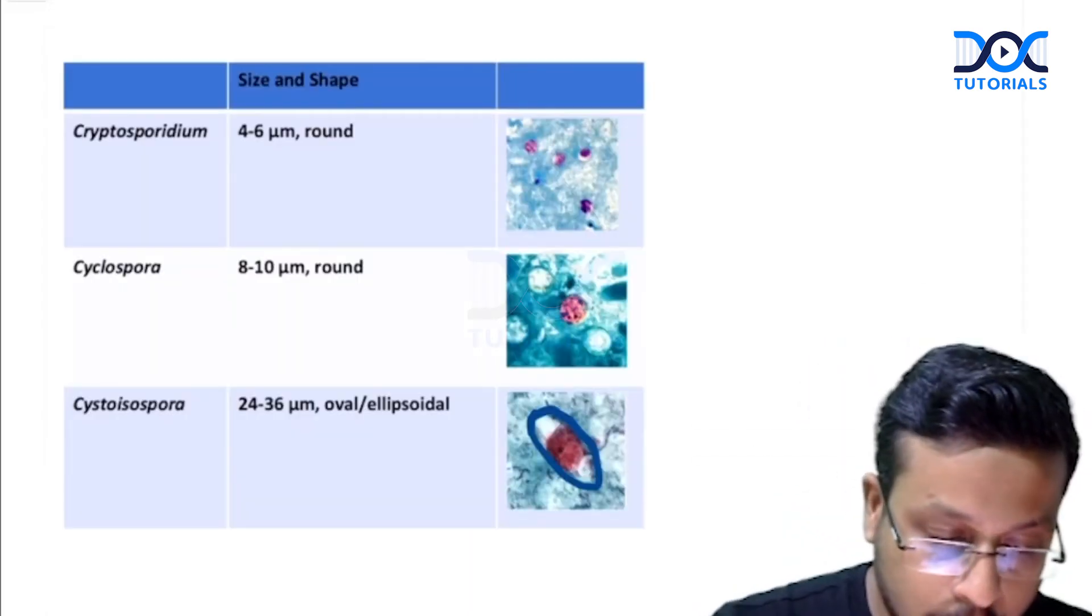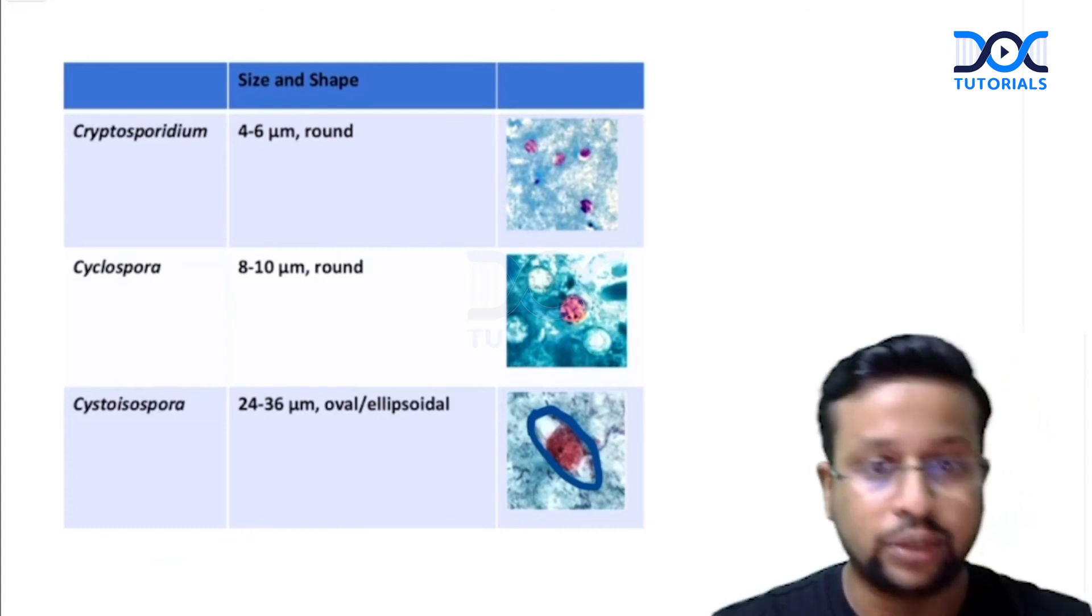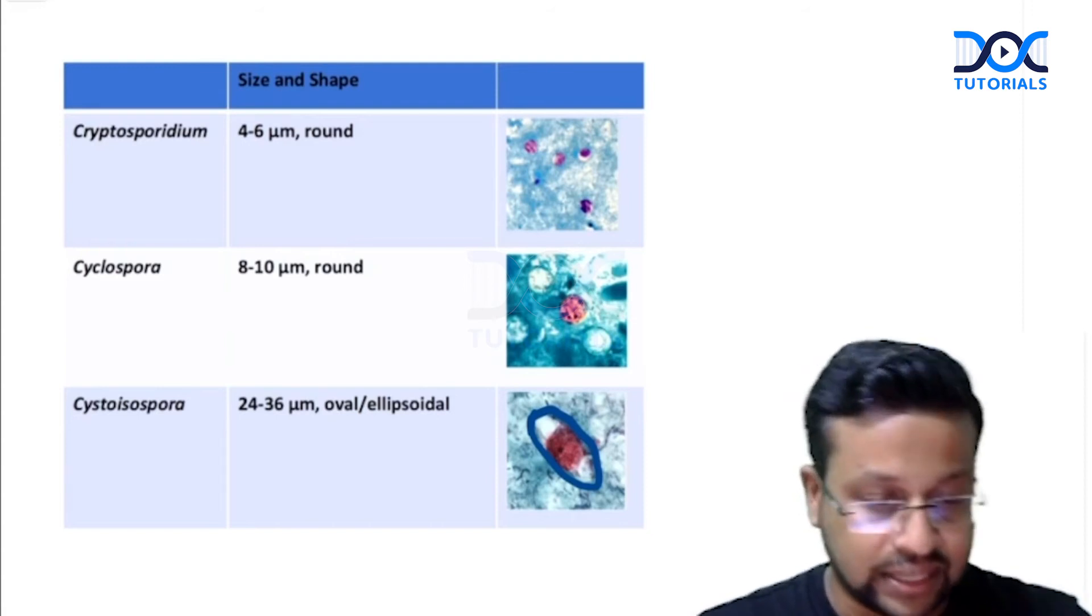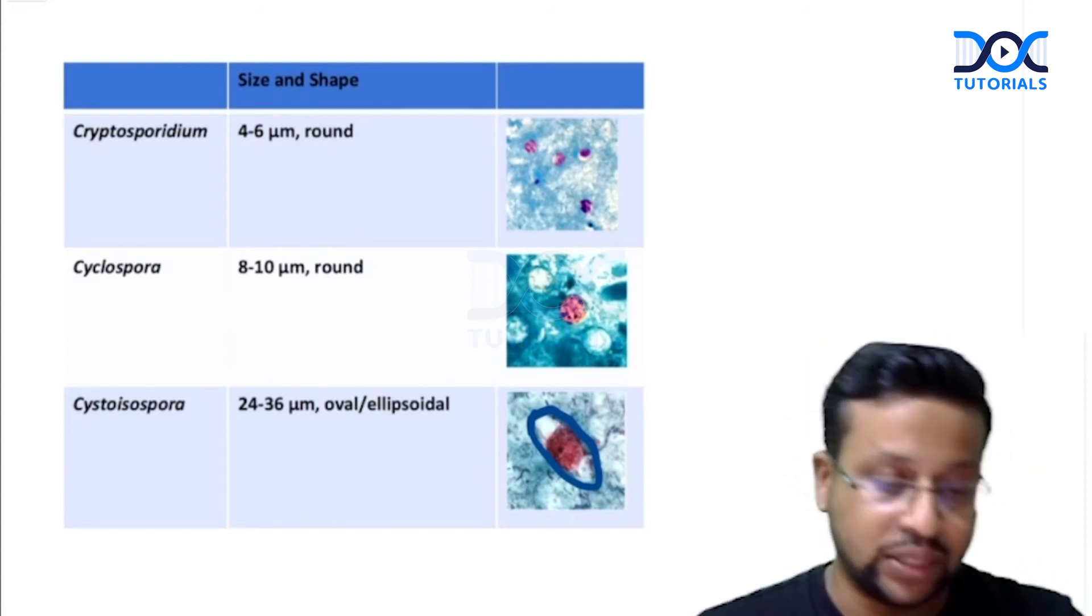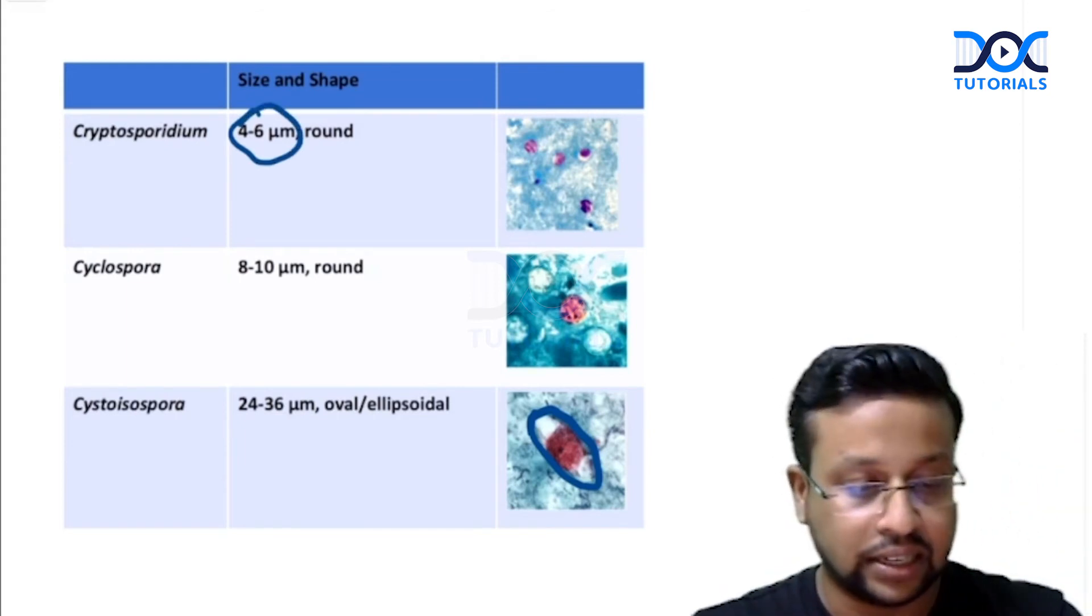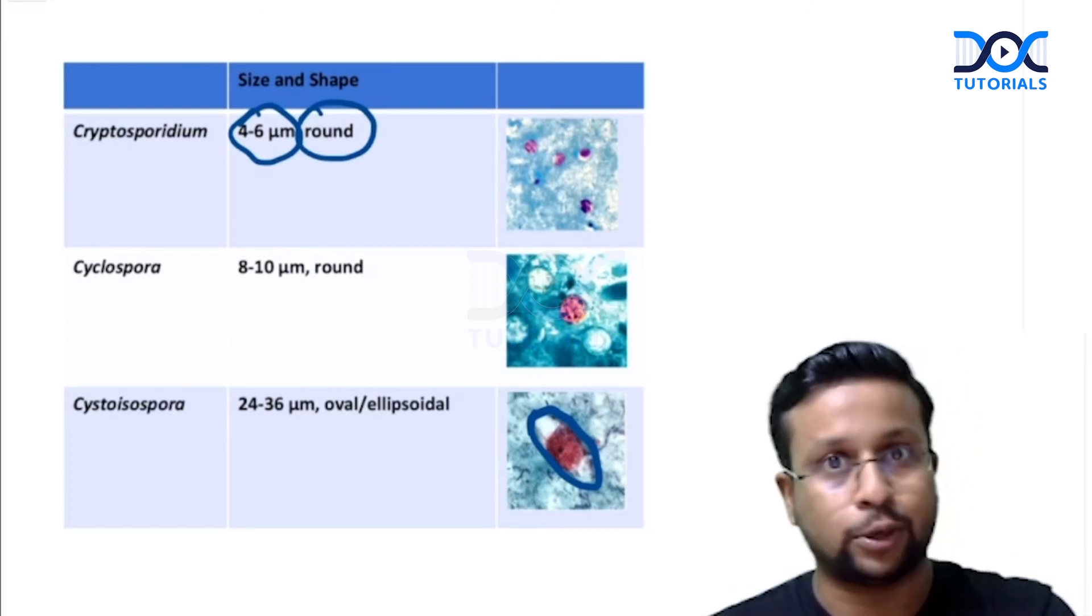Now to diagnose which one is our answer in this particular question, you can see here there is Cryptosporidium. The size of Cryptosporidium on modified acid fast staining - you can see they are 4 to 6 micrometers in size and they are round structures, 4 to 6 micrometers like our patient.